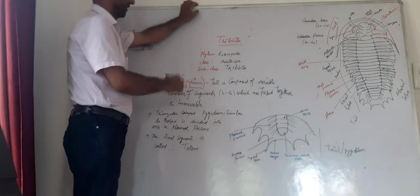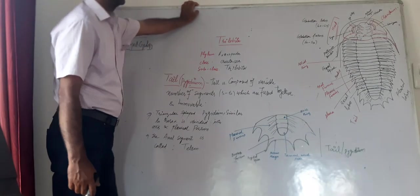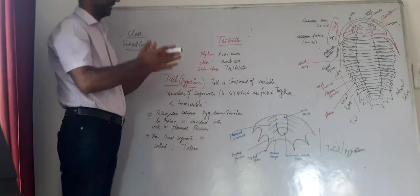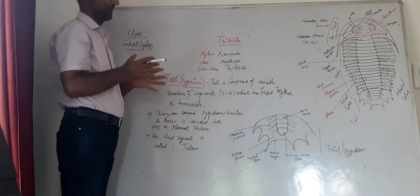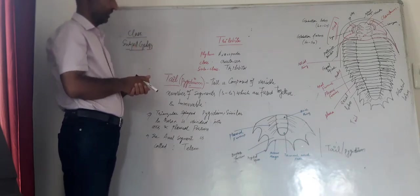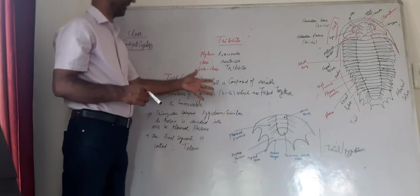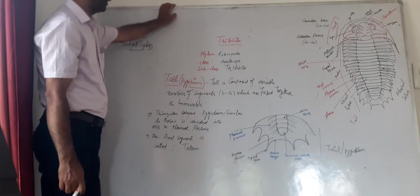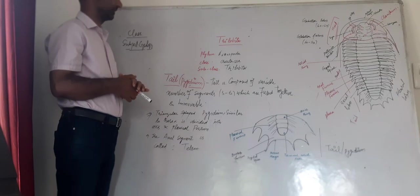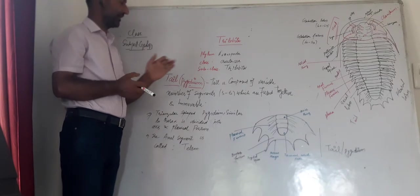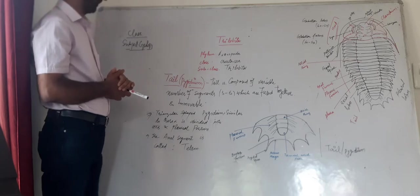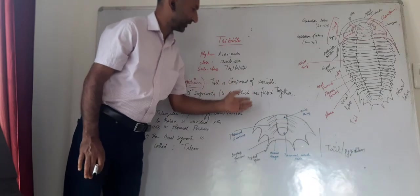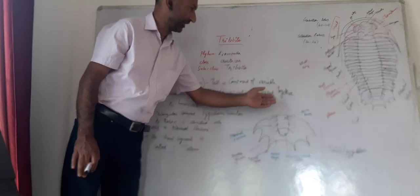Our today's topic is trilobite. As we have already discussed the two different parts, head shield cephalon and the body which are also known as thorax, today we will try to know about the tail part, also known as pygidium of the shell. Trilobite phylum is Arthropoda whereas the class is Crustacea and subclass is Trilobita. The pygidium part or the tail part which I have drawn here as separate from the body and head.